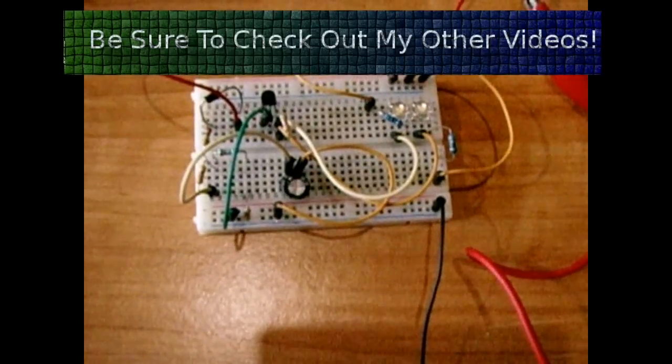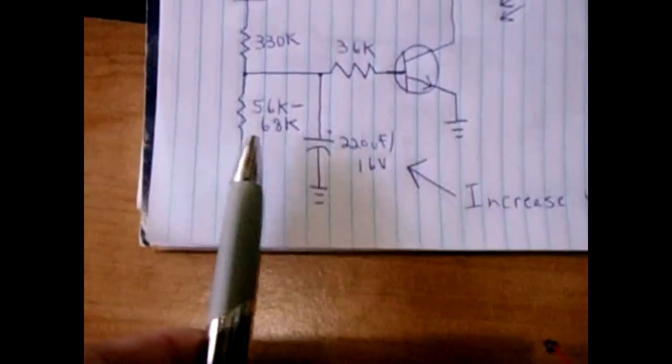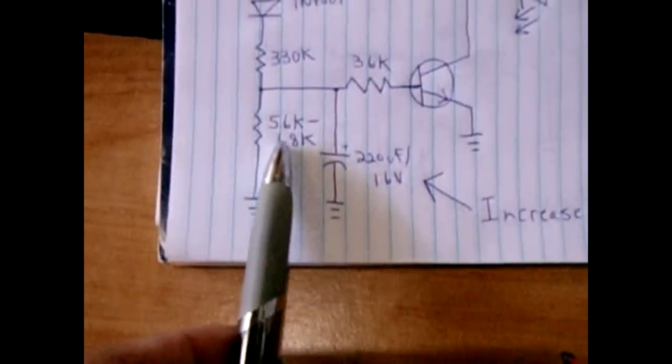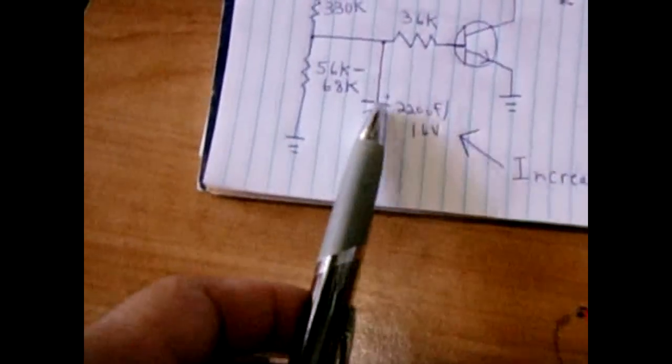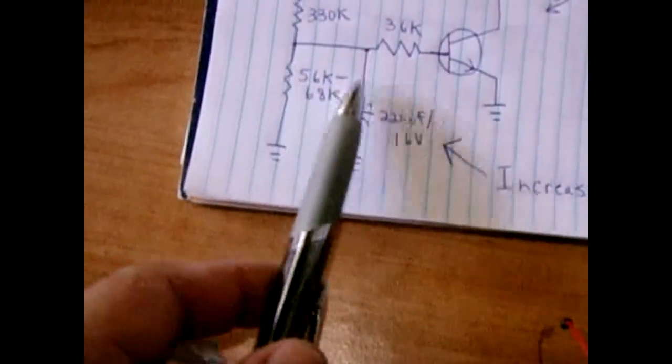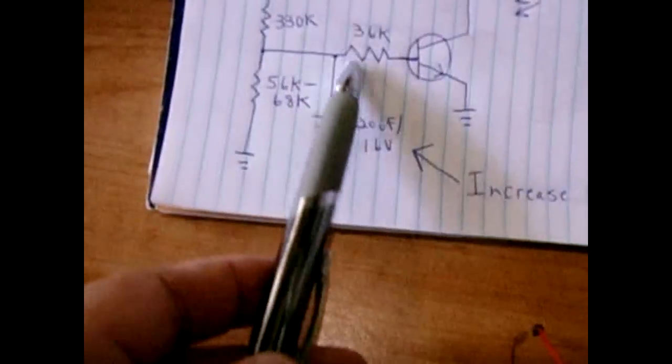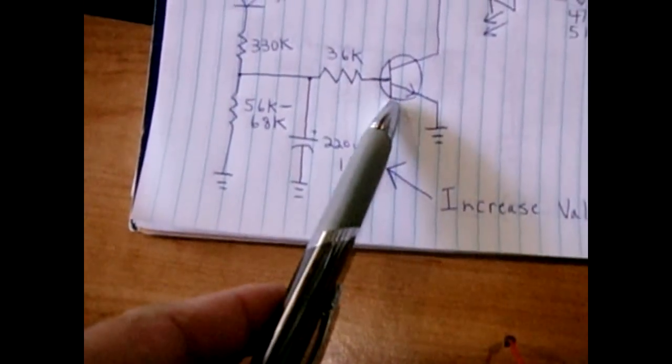Now you can have the fade off time speed up a little bit by decreasing the value of this resistor right here. By decreasing the value of this resistor it allows the capacitor to drain quicker because you'll be bleeding some of it to ground at the same time while it's keeping the transistor turned on.